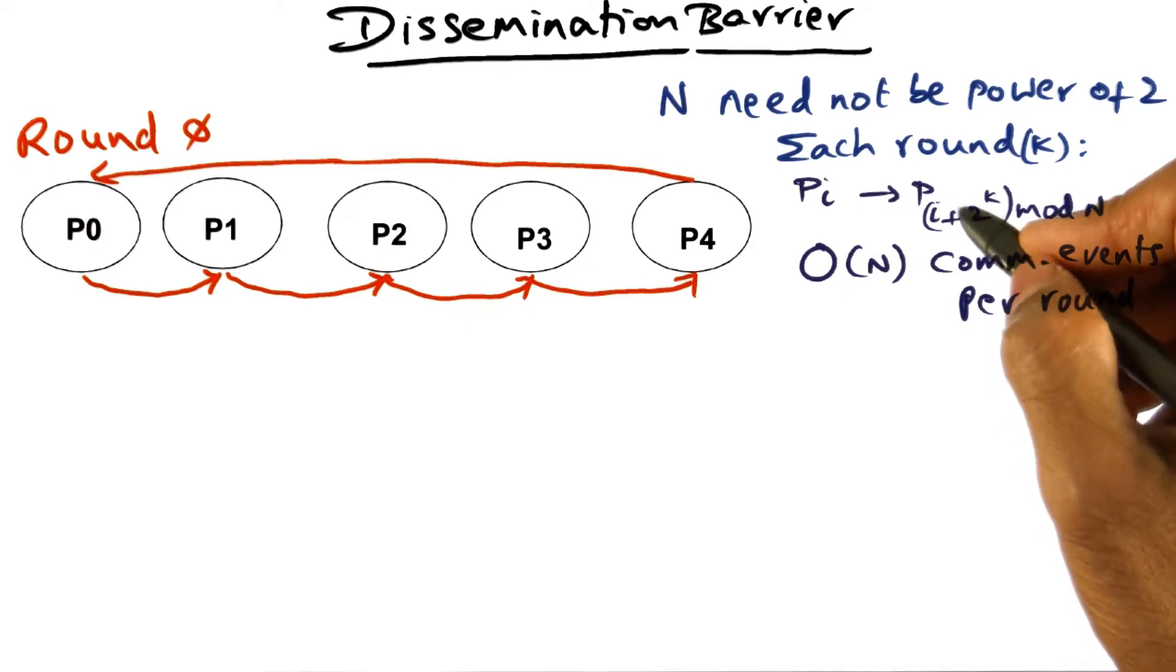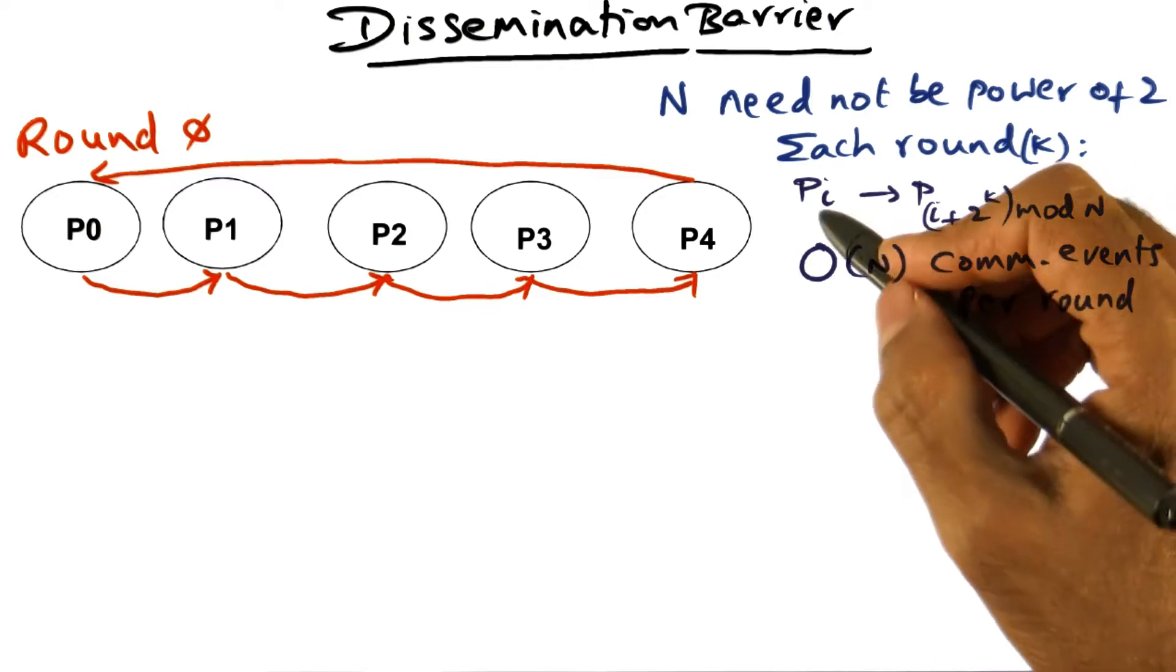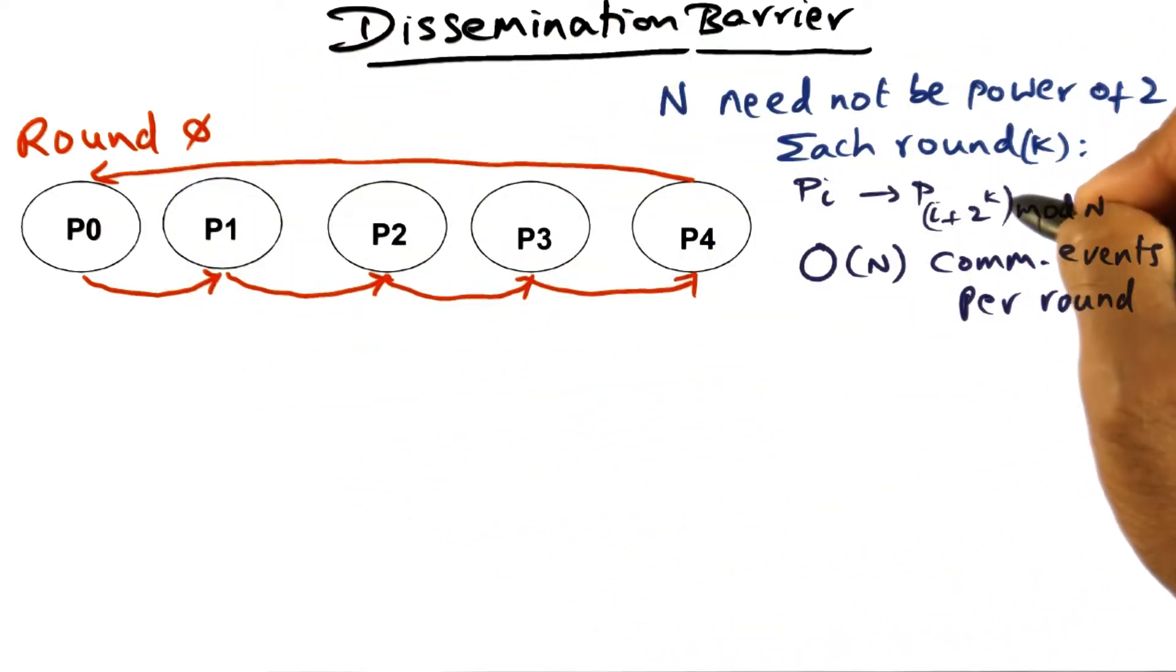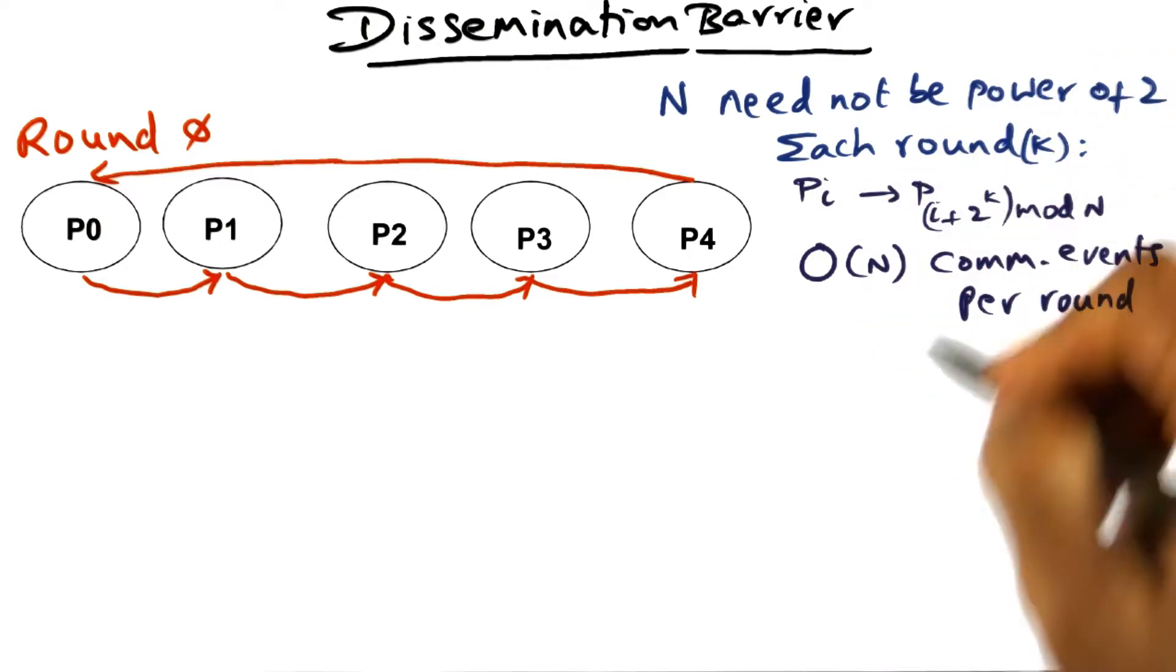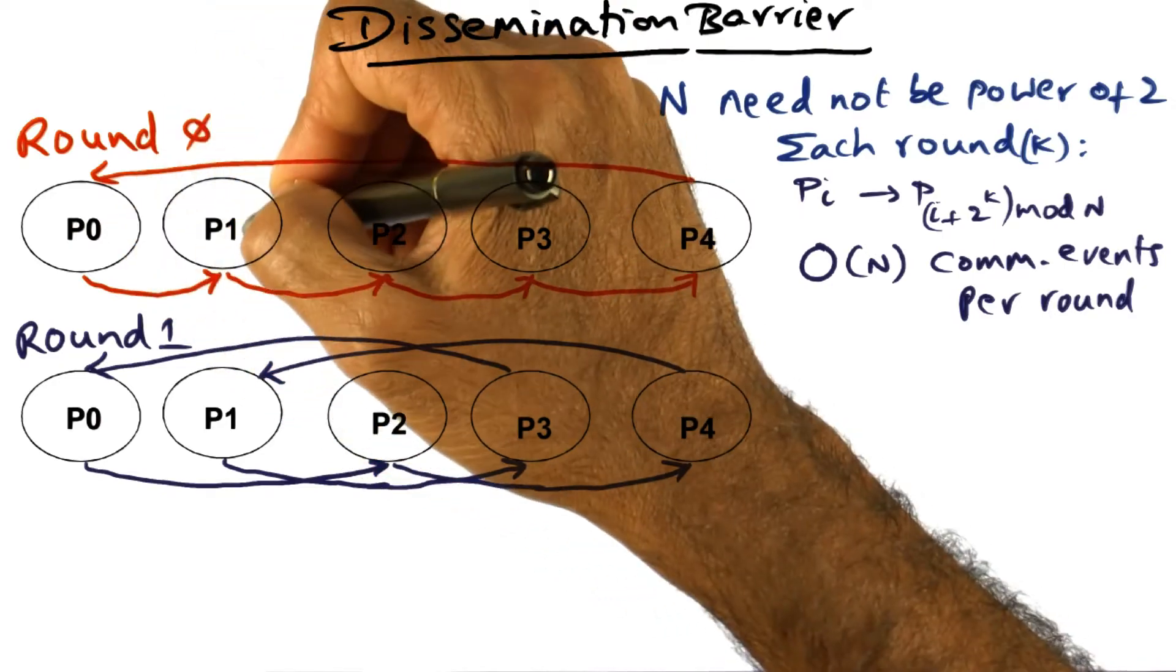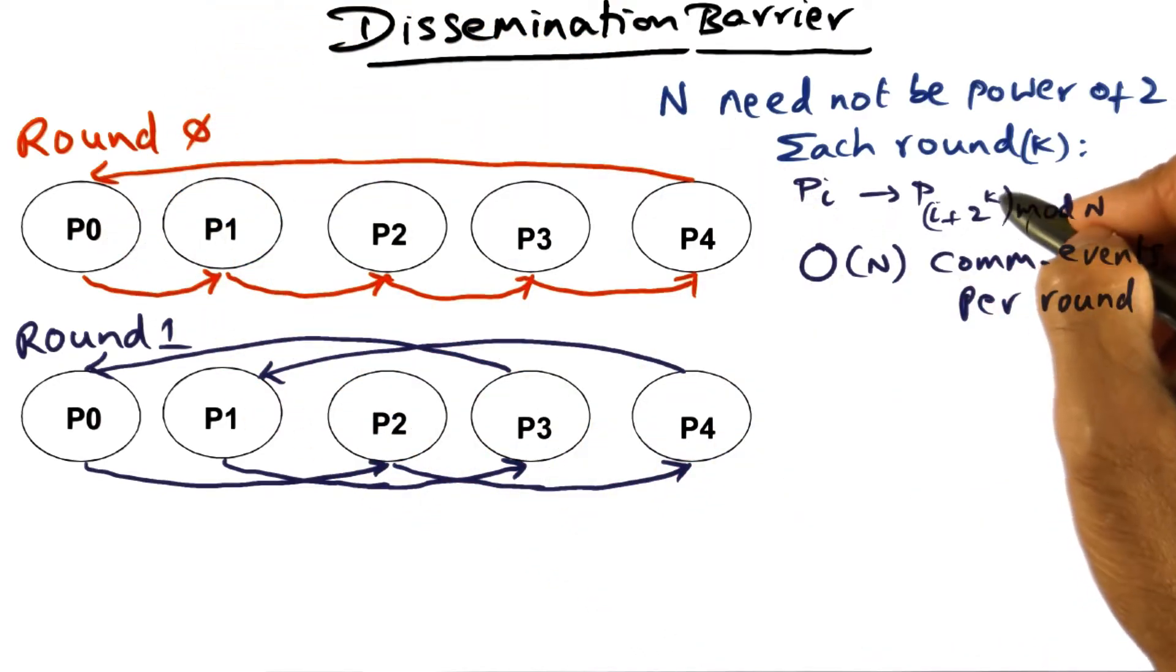So now you can quickly see what's going to happen in the next round. The next round k is going to be equal to 1, and therefore each processor is going to choose a neighbor to send a message to based on this formula. So in round 0, for instance, what we did was p0 was sending a message to a neighbor that is one distant from it because k was 0.